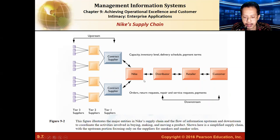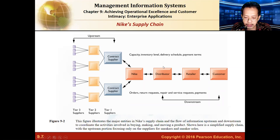Downstream supply chains involve the distributors, retailers, and customers your company serves. It covers orders — when a customer or retailer orders goods, that information flows through the distributor to your company. It also includes return requests, repairs, service requests, and payments.